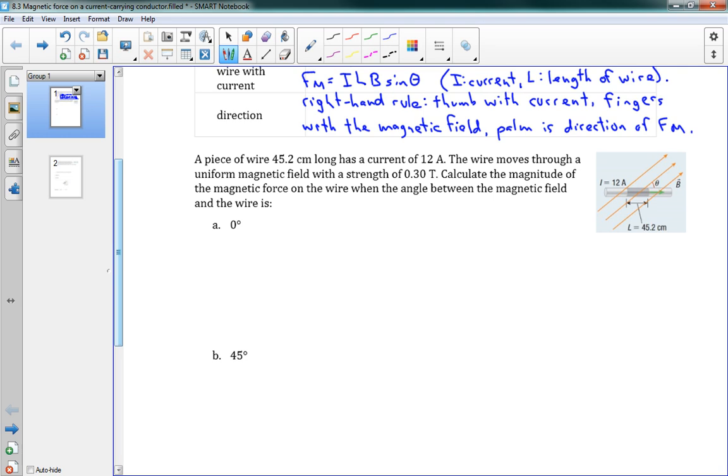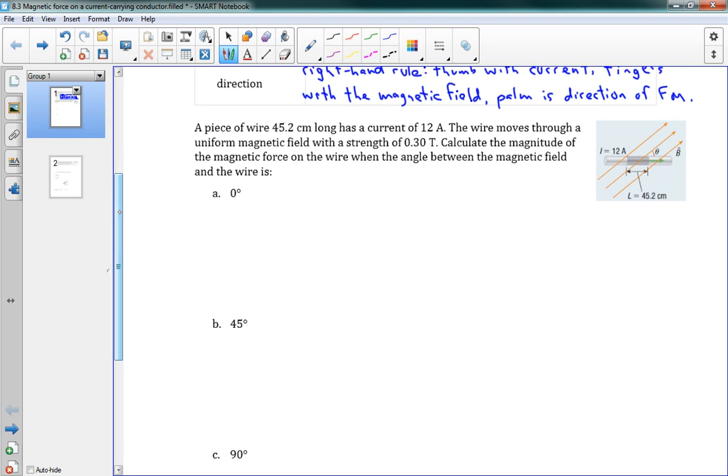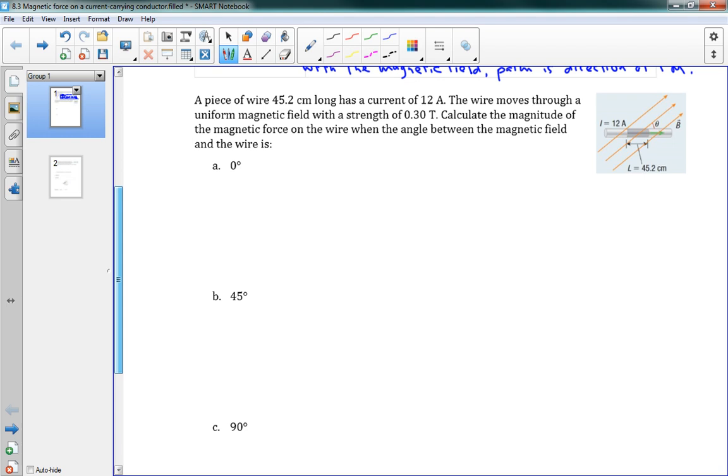Okay, so we have a few problems. This is going to be a short lesson because it's really the same formula as yesterday. Here we have a piece of wire 45.2 centimeters long with a current of 12 amps. The wire moves through a uniform magnetic field with a strength of 0.3 teslas. We want to calculate the magnitude of the magnetic force on the wire when the angle between the magnetic field and the wire is... And we've got ABC. The first one is 0 degrees.